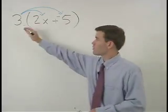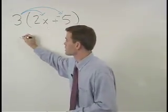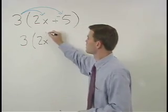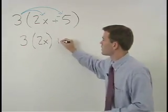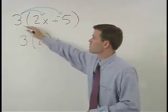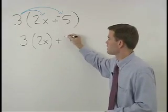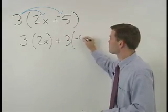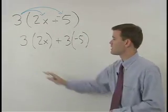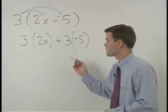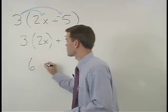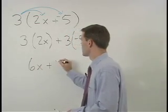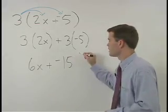So we get 3 times 2x plus 3 times negative 5, and this simplifies to 6x plus negative 15.